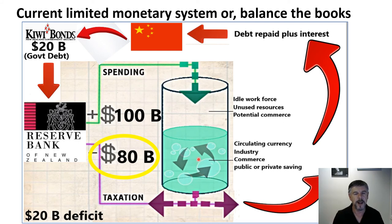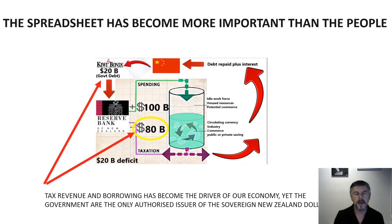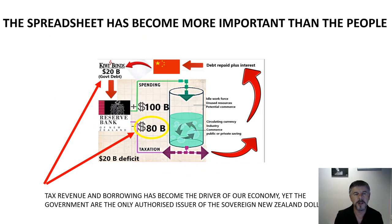There's almost nothing in this system that allows them to fill the economy up. It's a flawed system resulting in a loss of prosperity for people and businesses. The spreadsheet has become more important than the people — they're more interested in balancing the books than providing for the people they're supposed to serve. Tax revenue and borrowing have become the driver of the economy, yet the government is the only authorised issuer of the sovereign New Zealand dollar. How can this be?